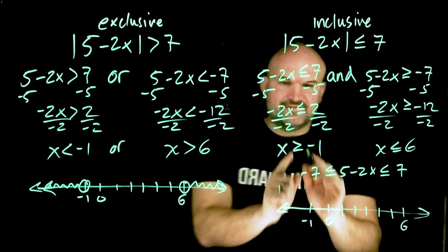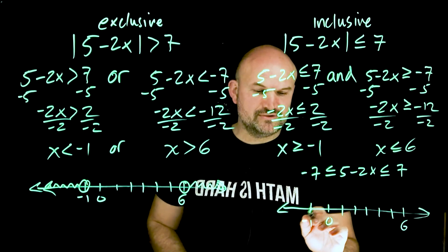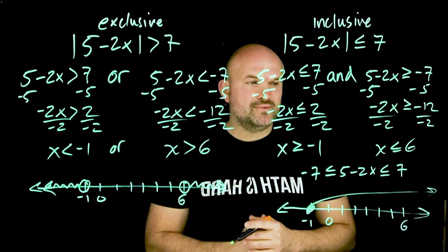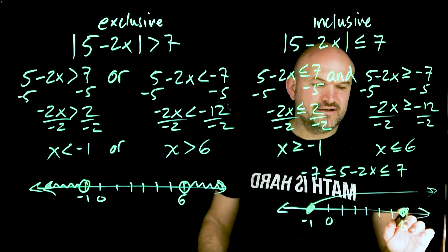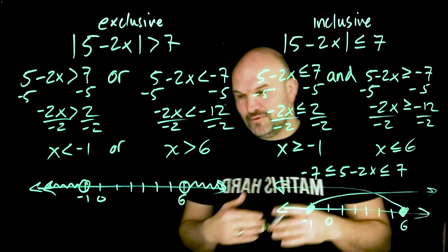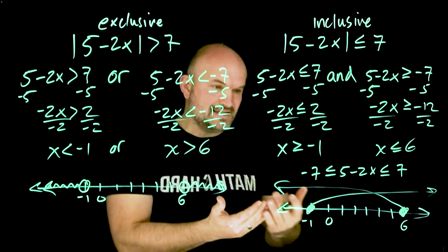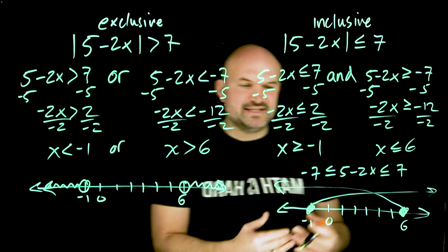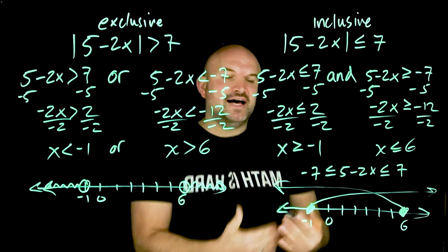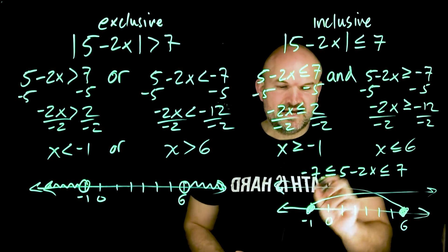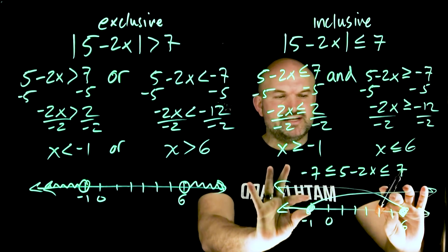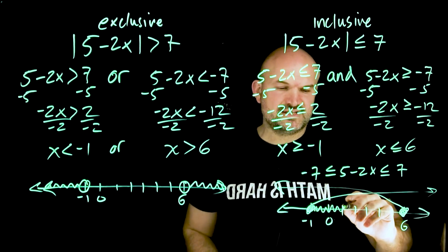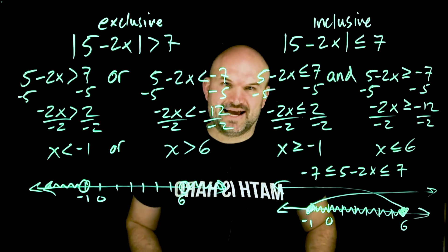Now for the inclusive solution: X is greater than or equal to negative one — that's a filled-in circle — going to the right. And X is less than or equal to six — filled-in circle — going to the left. Both of these conditions must be true simultaneously. The only values that satisfy both inequalities are between negative one and six. Between negative one and six, both graphs overlap, so the solution for this inequality has to be between negative one and six.